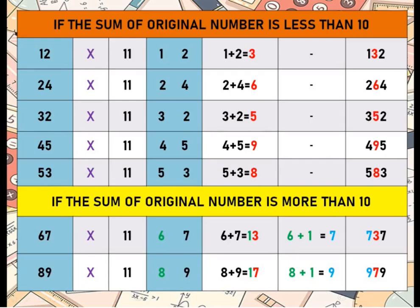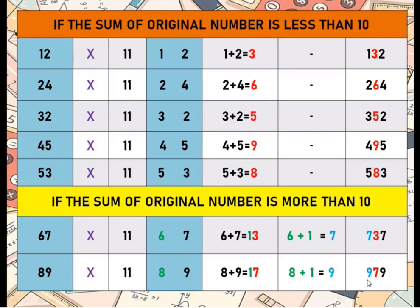If the sum of the digits is more than 10: 67 into 11 — add 6 plus 7 equals 13; since 13 is more than 10, we cannot place it in the middle. So we add the first digit and the carry: 6 plus 1 equals 7, replace 6 with 7, and get 737. 89 into 11 — add 8 plus 9 equals 17; since 17 is more than 10, we add 8 plus 1 equals 9, replace 8 with 9, and get 979.